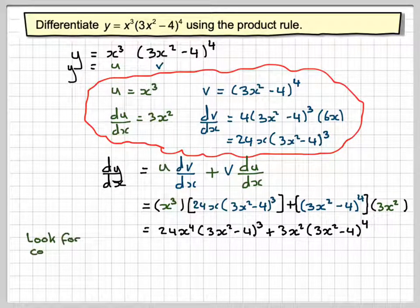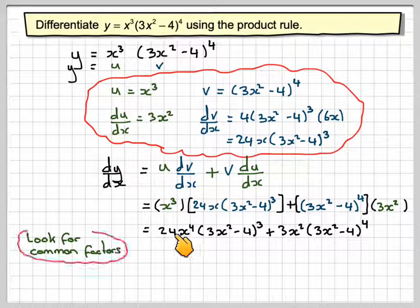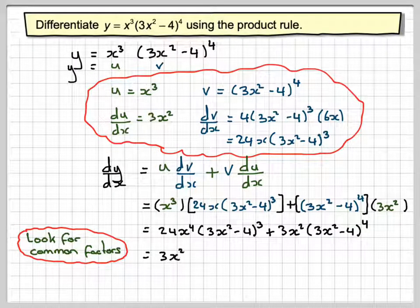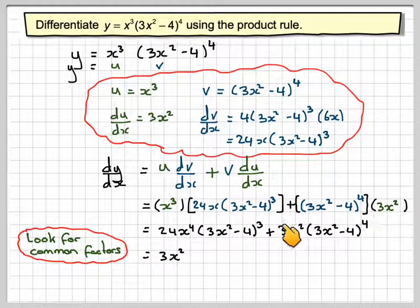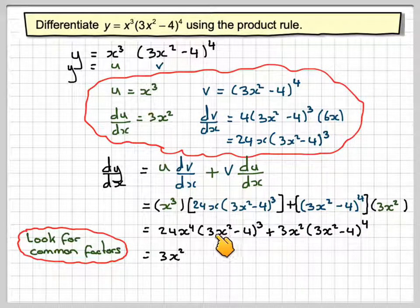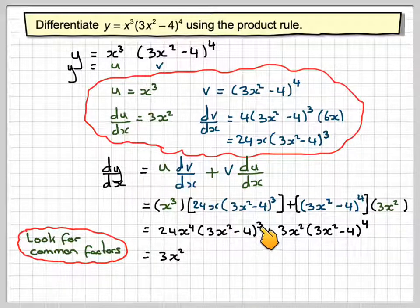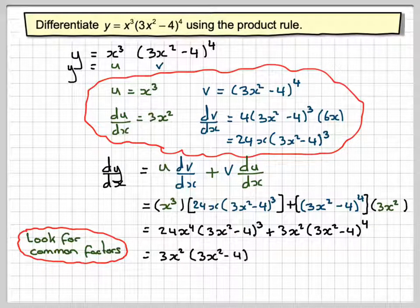Now you look for common factors. So there's a common factor here of 3x squared that needs to come out. And here looking at this and this, the highest power here is 4, and here we have a 3, so we need to take out 3x squared minus 4 to the power of 3.